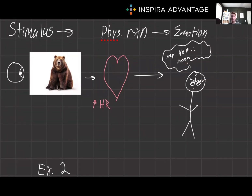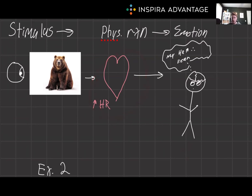Let's go through that one more time, because it's super important you understand this. First, there's a stimulus — you see the bear. Next, you have a physiological response — your heart rate increases and you start shaking. Third, you have the emotional experience — you interpret the physiological change as the specific emotion. Note: it is only the physiological reaction that matters. You don't consider the stimulus when deciding you're afraid in the James-Lange theory.